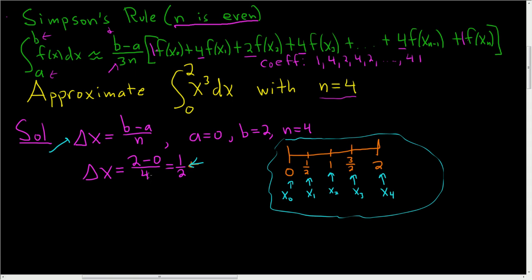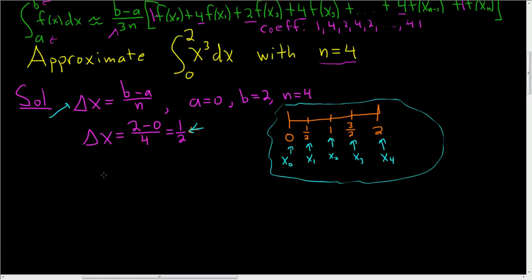The last thing to do is use the formula. OK, so let's attempt to do that. Let me use a different color. Actually, I'll stick with blue. I like the blue. So all right, let's do it. So the definite integral from 0 to 2 of x cubed dx, right? Our a is 0, is approximately equal to, let's see, b minus a divided by 3n.